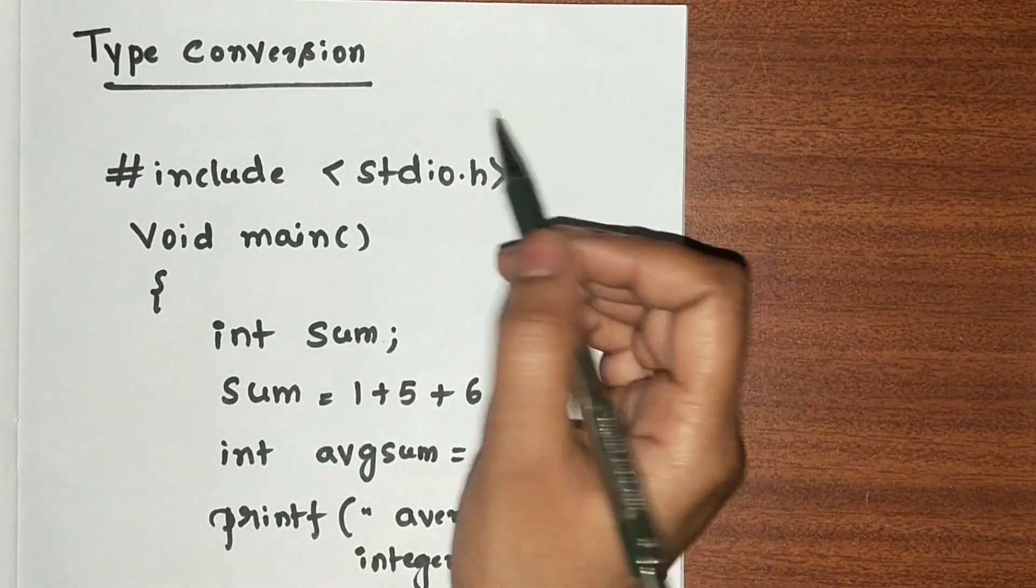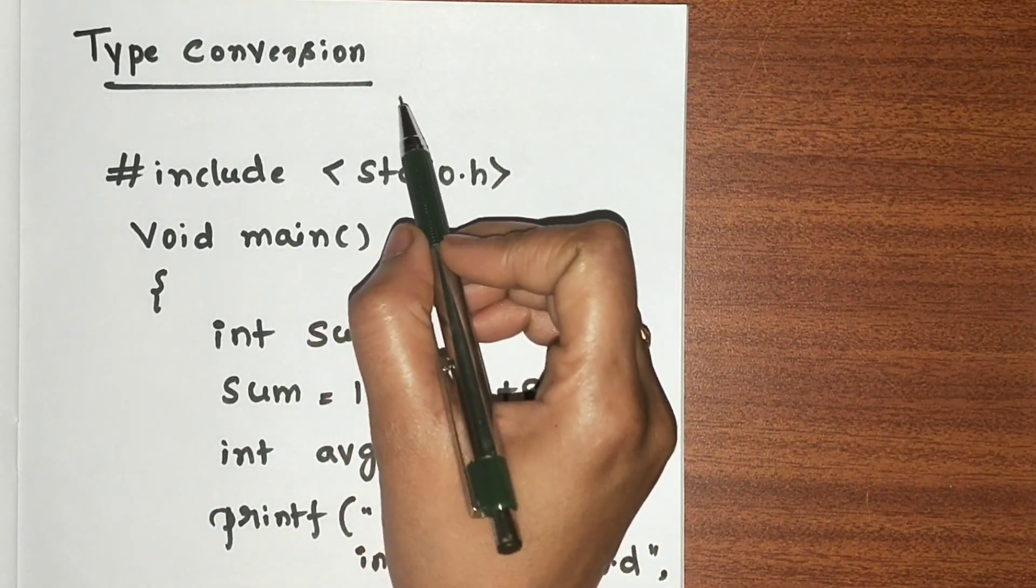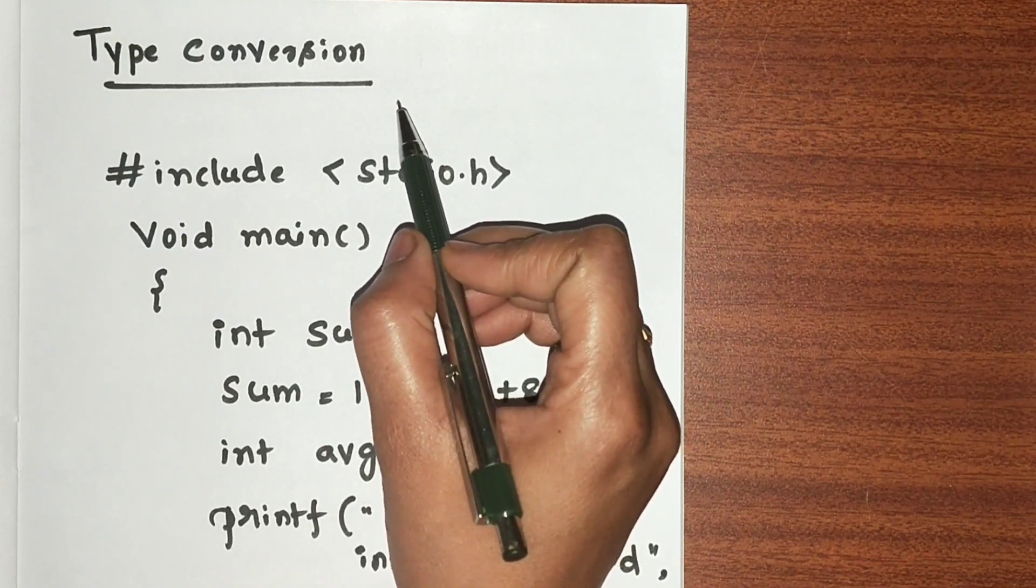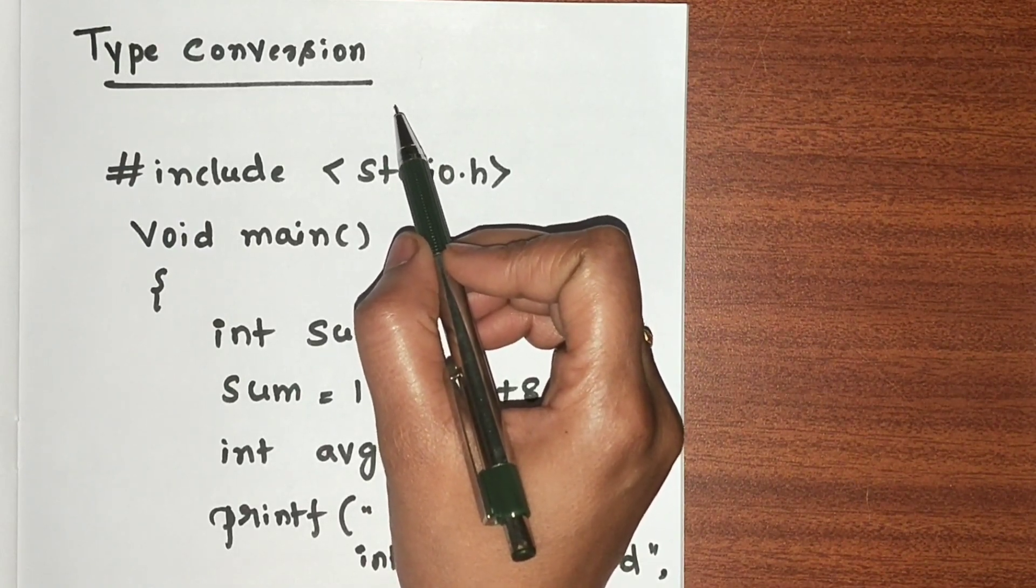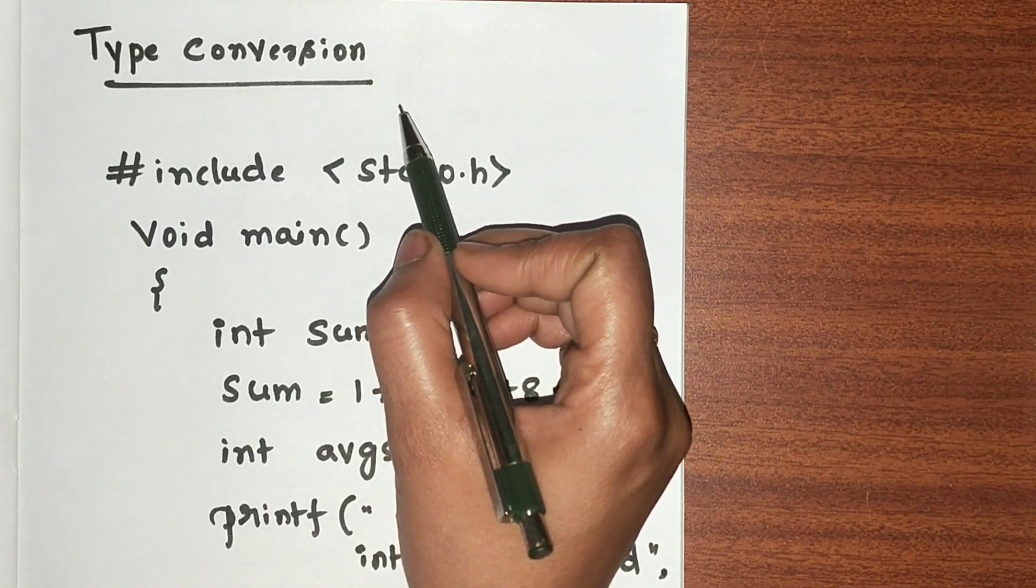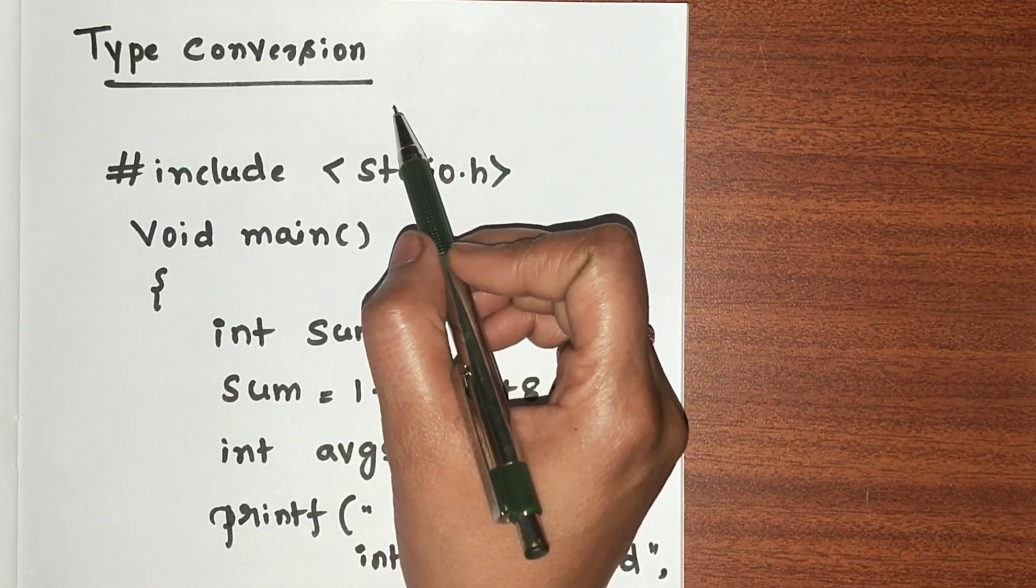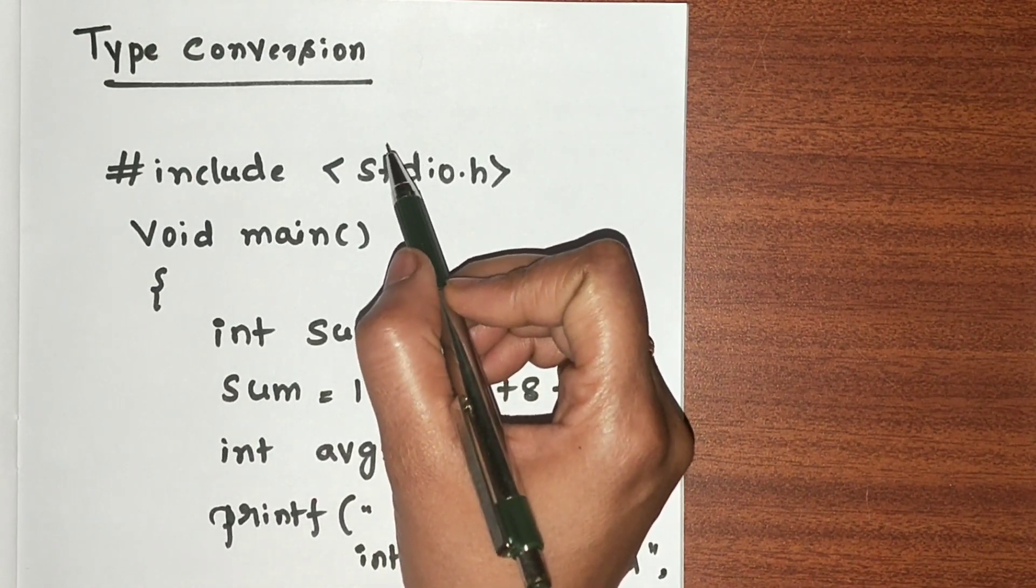Hello everyone, today I am going to discuss type conversion. What is meant by type conversion? Type conversion is nothing but converting one data type into another data type. For example, in this program, we are converting integer type to floating point data type.